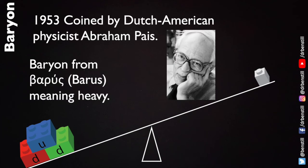It was coined in 1953 by Dutch American physicist Abraham Pais and it comes from the Greek baris meaning heavy. The on bit just denotes that it is a noun or a particle.